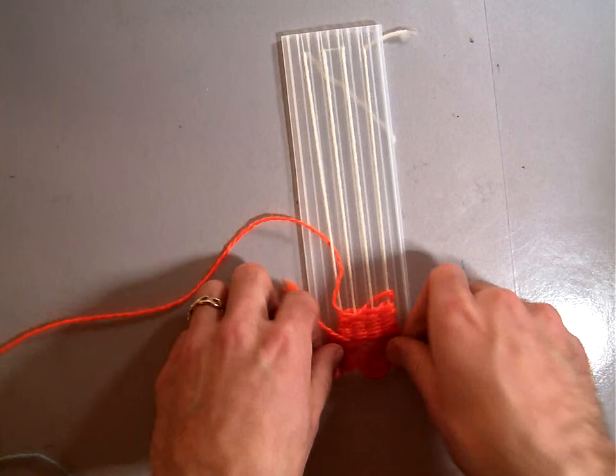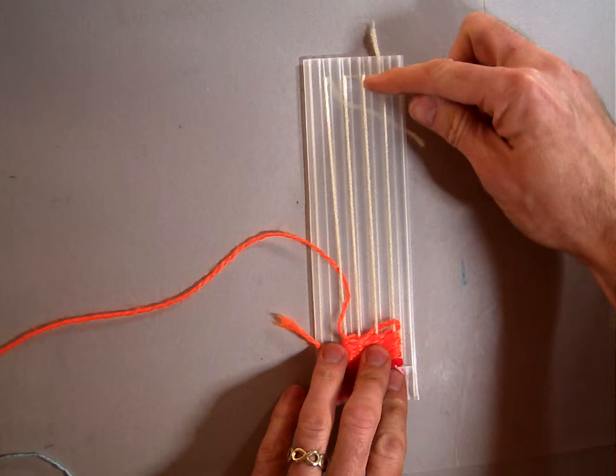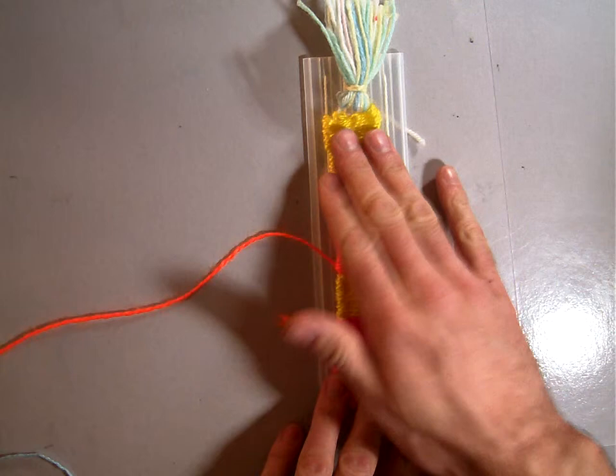Continue weaving until you get all the way up to the top as far as you possibly can because we're going to need to loosen it later after you put our tassel on. So you need to scrunch it up, scrunch down and put as much yarn in as you can.